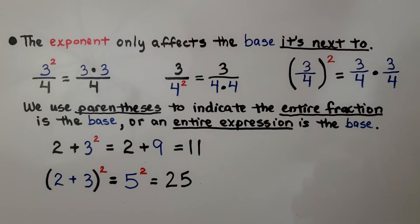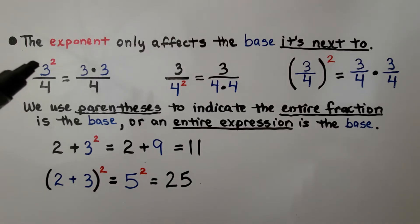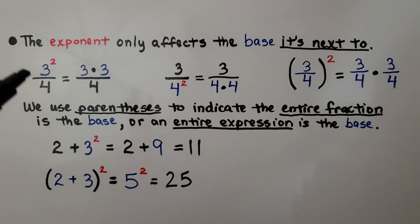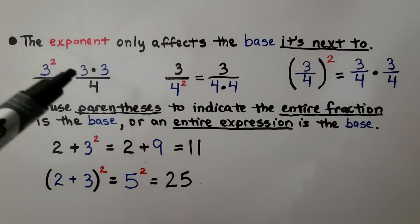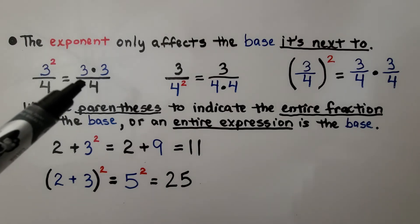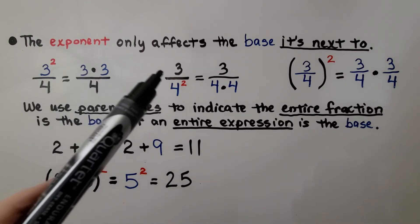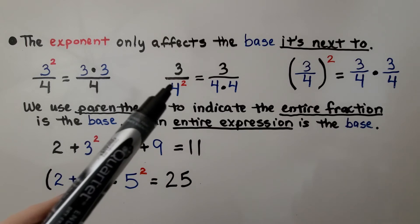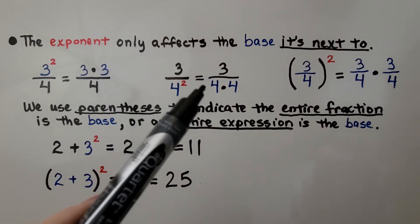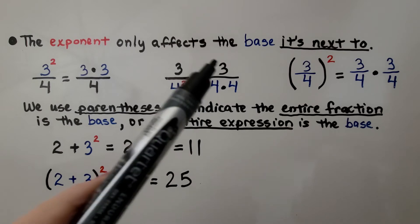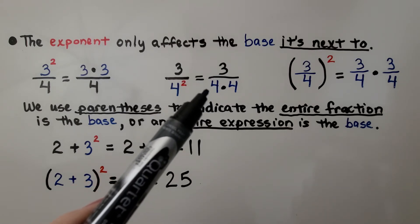As we talked about in the last lesson, the exponent only affects the base it's next to. If we have a fraction 3 fourths and there's a little exponent next to the numerator, then that exponent is affecting the 3, not the 4. That means we have 3 times 3 over 4, which would be 9 over 4. If we have a fraction and the denominator has an exponent, that means we have 3 over 4 times 4, giving us 3 over 16 — three sixteenths.